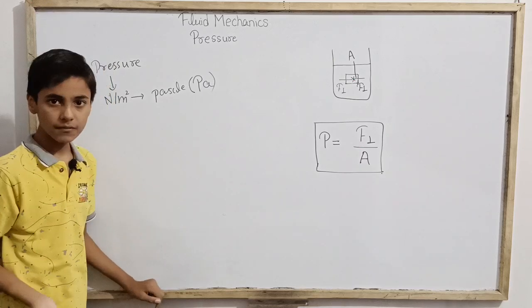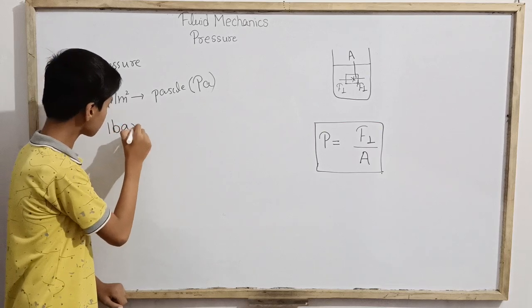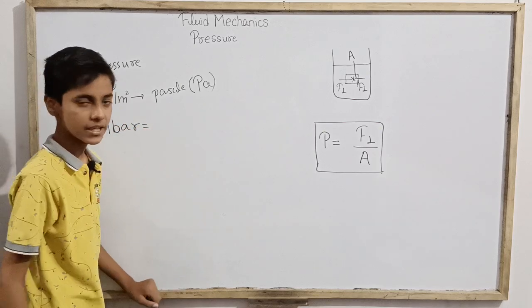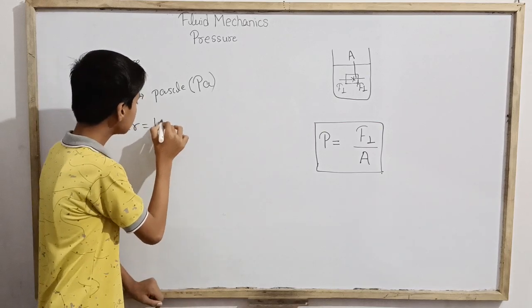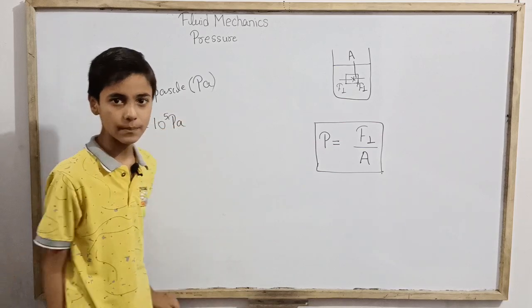There are also other common units of pressure, something like bar. A very common unit is bar for measuring pressure. This is actually 10 to the power 5 pascals, which is known as one bar.